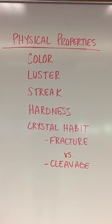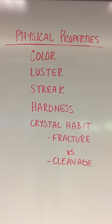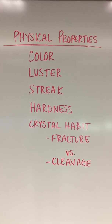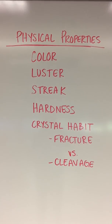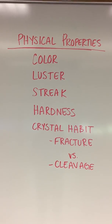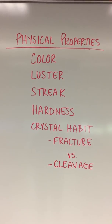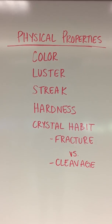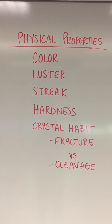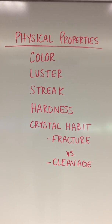So you're looking at the color — is it purple, yellow, clear, white, pink? The luster: is it metallic looking or non-metallic? Streak color: the color that the mineral leaves behind when it's crushed to powder.